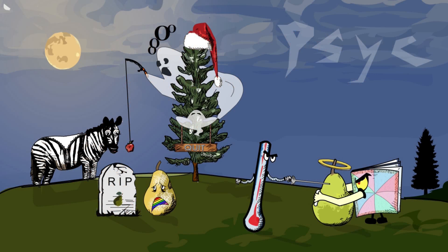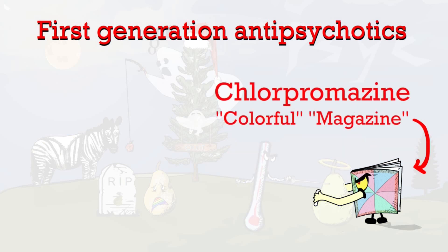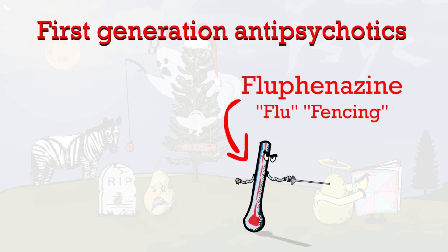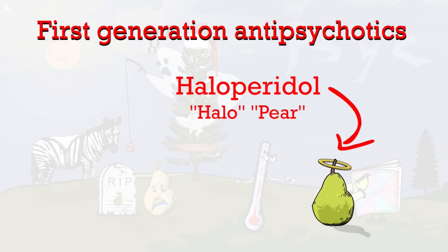In this picture we highlight three first-generation antipsychotics, all located on the bottom right. Chlorpromazine is represented by the colorful magazine — 'colorful magazine, chlorpromazine.' Fluphenazine is the thermometer representing the flu, who is fencing — 'flu fencing, fluphenazine.' Haloperidol is the halo pair — 'halo pair, haloperidol.'